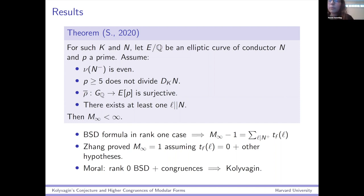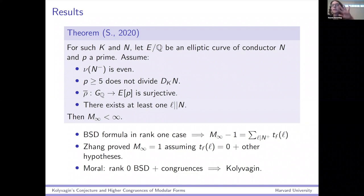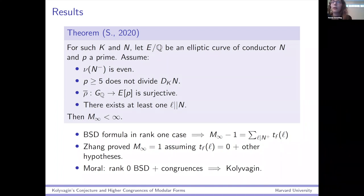The first really groundbreaking work on this conjecture was done by Wei Zhang in 2013 or 2014, who proved that M_infinity was exactly one, assuming that these Tamagawa factors vanish and some other hypotheses. The way Wei Zhang proved this is similar to how this theorem goes: you use congruences of modular forms to connect the question about E to a question about a rank zero modular form, which is then easier to handle — thanks to very powerful theorems by Kato and Skinner-Urban, we know all about the rank zero BSD formula.